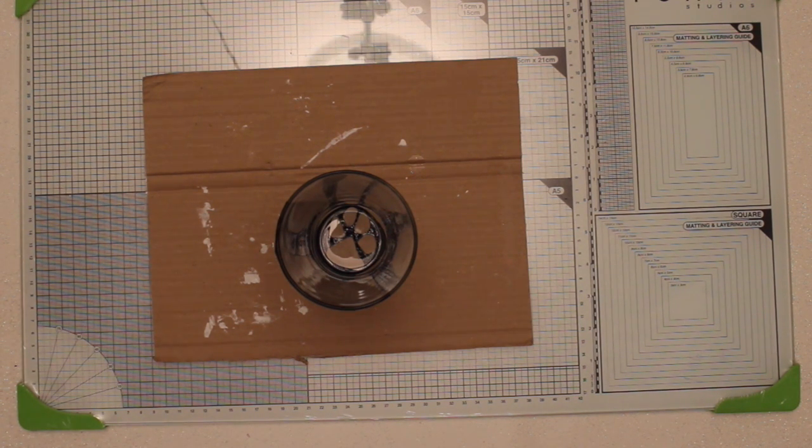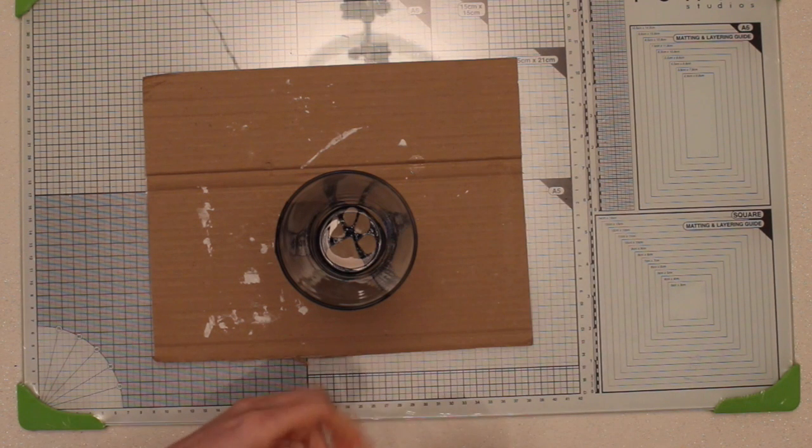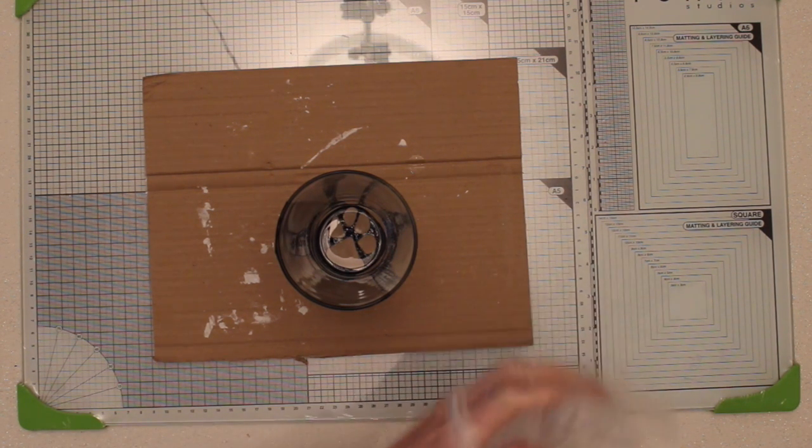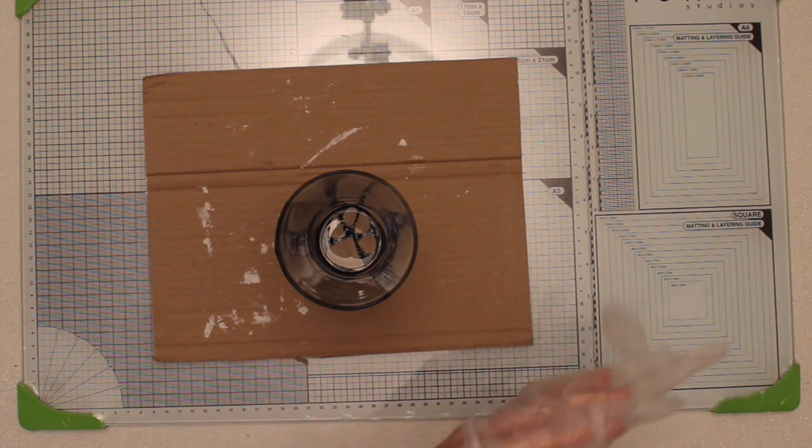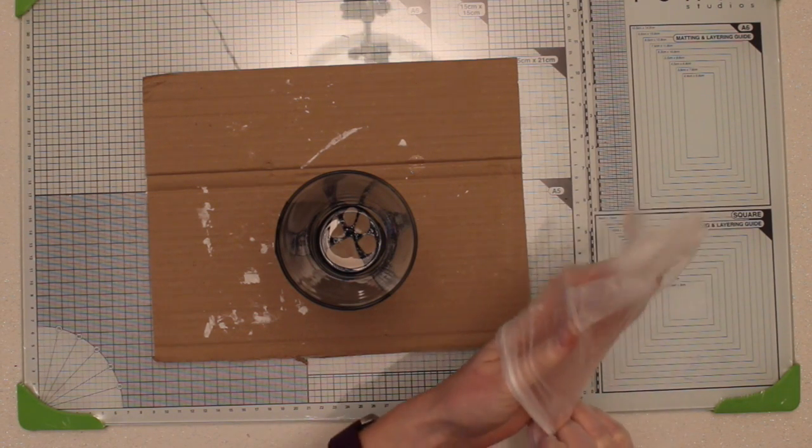When sticking it down just make sure that you pay particular attention to the edges of your image. So making sure that it's pressed down nice and firmly so that the etching cream can't just work its way underneath.